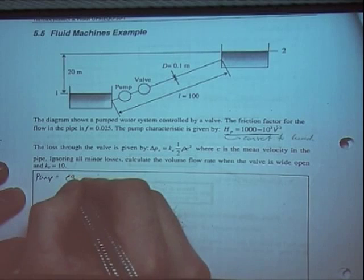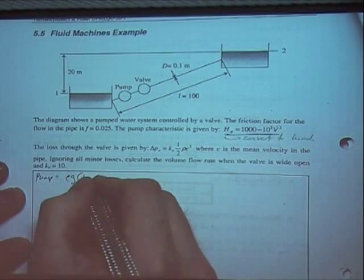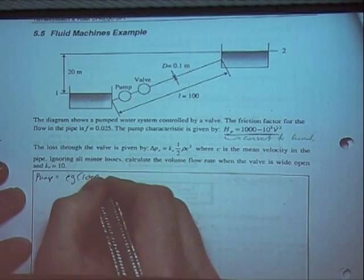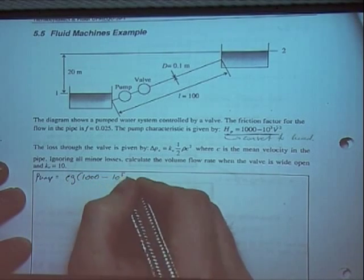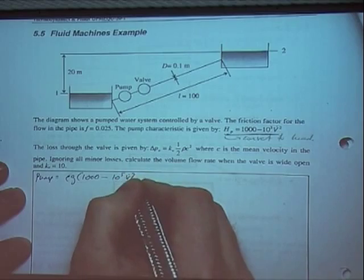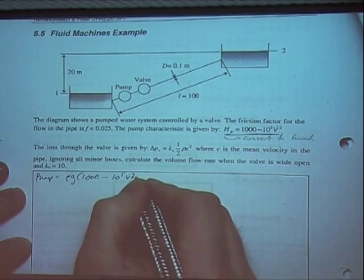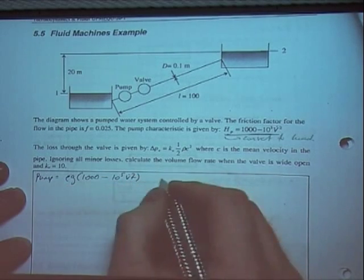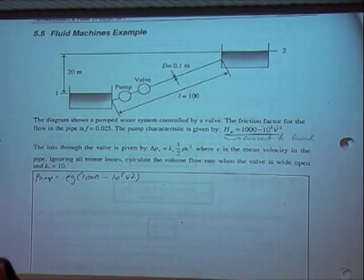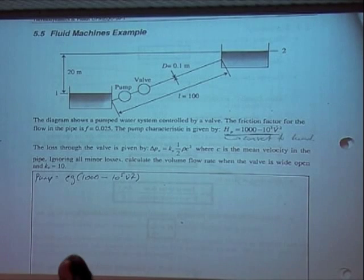The pump characteristic is going to be rho times g times by 1,000 minus 10 to the 5 times by V-dot squared. So that's the pressure rise that the pump can create.